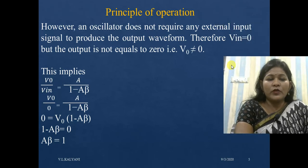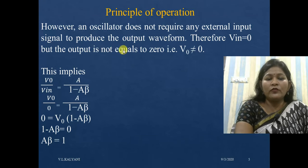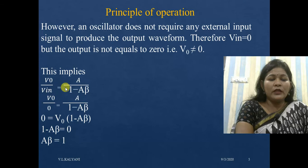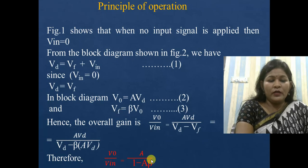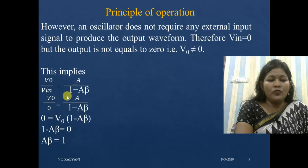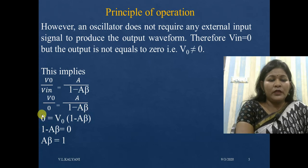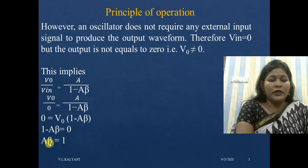An oscillator does not require any external input signal to produce the output waveform, therefore Vin = 0, but the output is not equal to zero. This implies V0/Vin = A / (1 − Aβ). Since Vin = 0, solving this equation gives V0 × (1 − Aβ) = 0. Because V0 ≠ 0, we conclude that Aβ = 1.